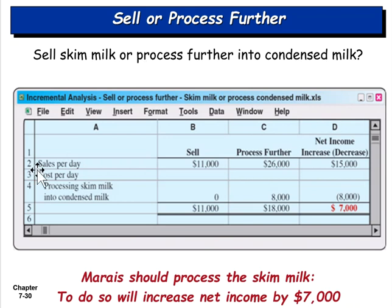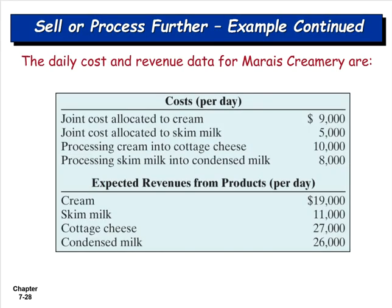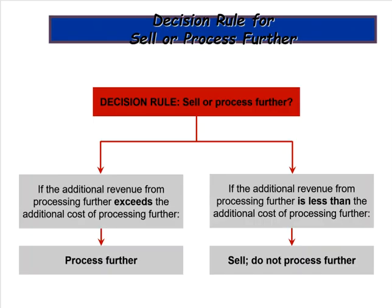But here's a question: if you tell your customer you'll only sell cream and condensed milk, will they be happy? Probably not. This is one of those cases where you have to take non-financial considerations into account — customers want a wide variety of dairy products, so you can't just pick the most profitable items and may need to accept lower margins to offer a full complement. Financially: if additional revenue from processing exceeds additional cost, process further; if not, sell as-is.